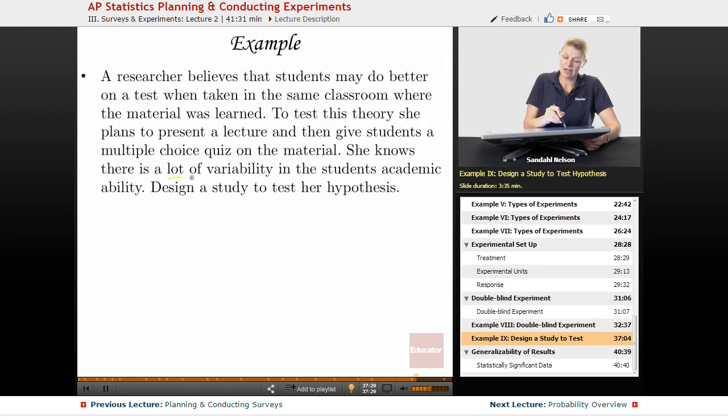So she knows there's a lot of variability in the students' academic ability. That's giving you a hint right there that you need to do something before the experiment based on academic ability. So you could match on academic ability or you could block on academic ability.